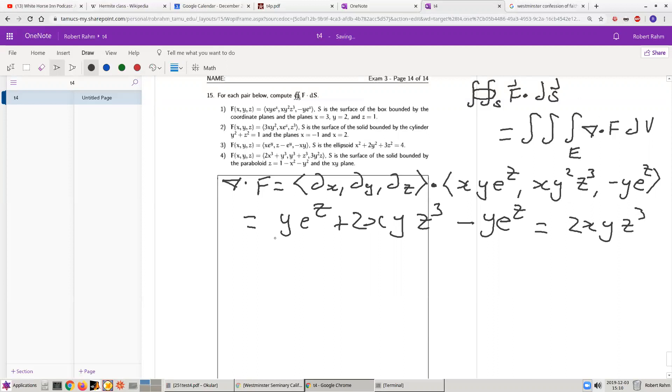Okay, so that's the divergence. Okay, so the region that is enclosed by this, so s is the surface bounded by the box bounded by the coordinate planes in these three planes. Okay, so this means x is going to go from 0 to 3, y will go from 0 to 2,